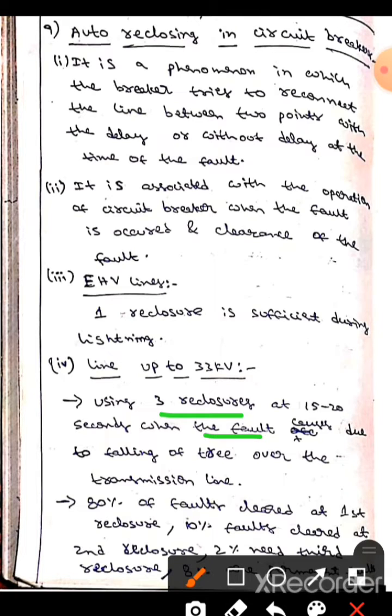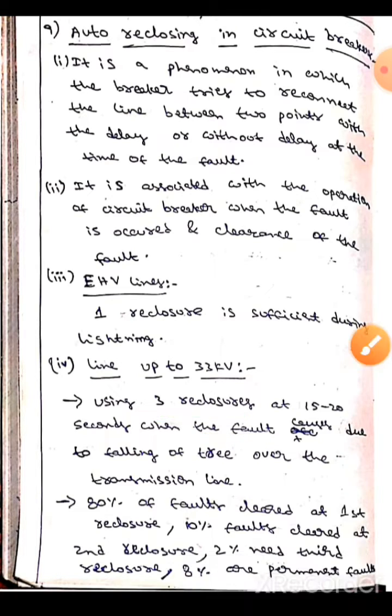80% of faults are cleared at the first recloser, 10% of faults are cleared at the second recloser, 2% need the third recloser, and 8% are permanent faults.